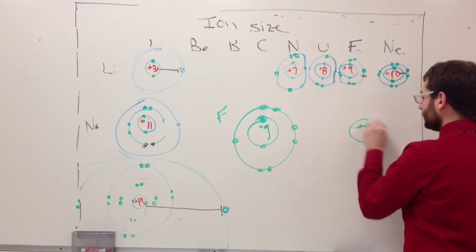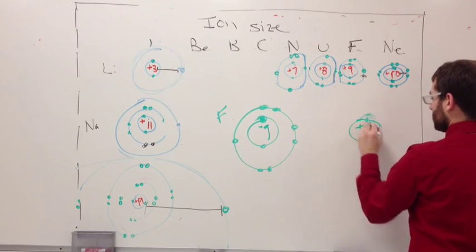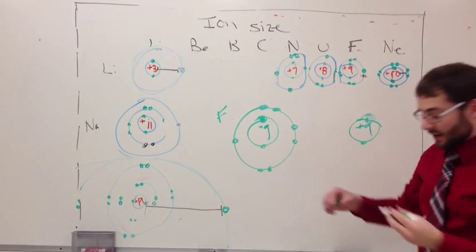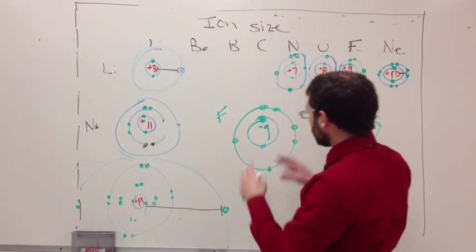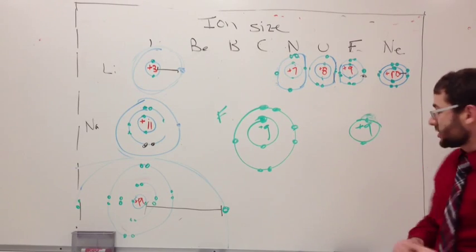When it does that... Oh, we only need two in there. So we have two. It wants to gain another one. When that happens, the size is going to increase, and the reason for that is because of the balance of the charges.